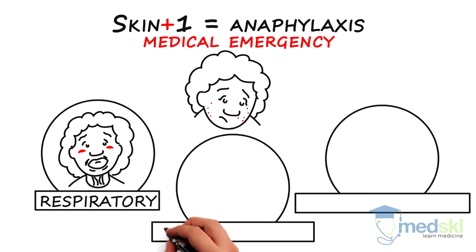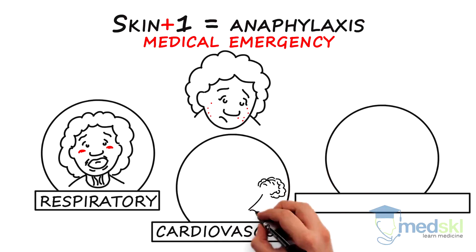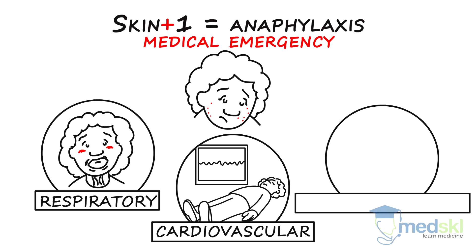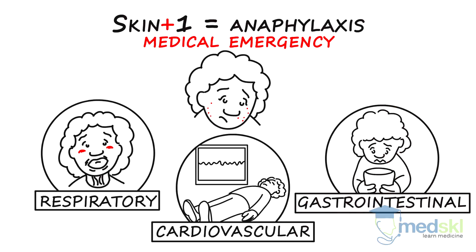The second system is cardiovascular, presenting with hypotension or frank shock and complete circulatory collapse. The third system is gastrointestinal, presenting with nausea, vomiting, diarrhea and abdominal cramps due to the massive histamine release.